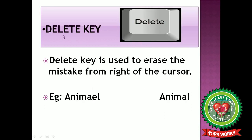The next key term is delete key. Delete key is also used to erase the mistake, but from the right side of the cursor. For example, I have typed the word 'animal' and by chance an extra 'e' is also there to the right side of the cursor. I press the delete key and I get the correct word 'animal'. So delete key is used to erase the mistake from the right of the cursor.